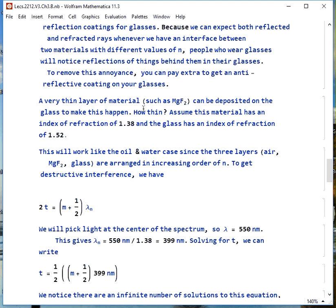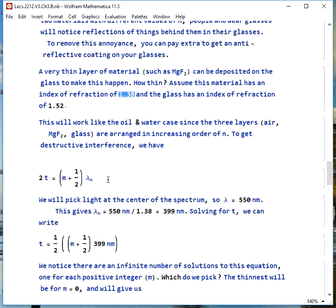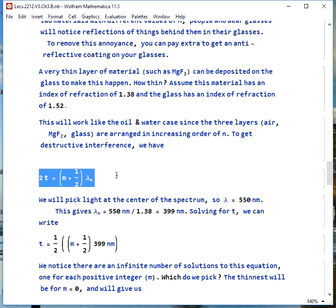The way they do it is they put a layer of this salt magnesium fluoride on the glass. This is a very thin layer. This magnesium fluoride has an index of refraction of 1.38. Regular glass we usually assume has index of refraction of 1.52.